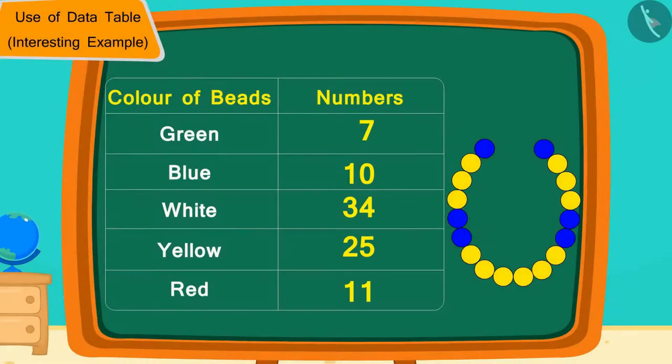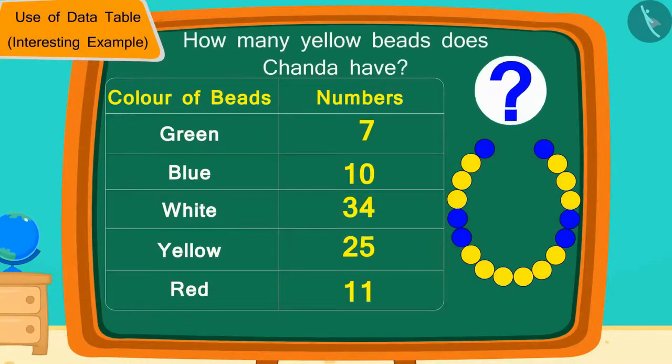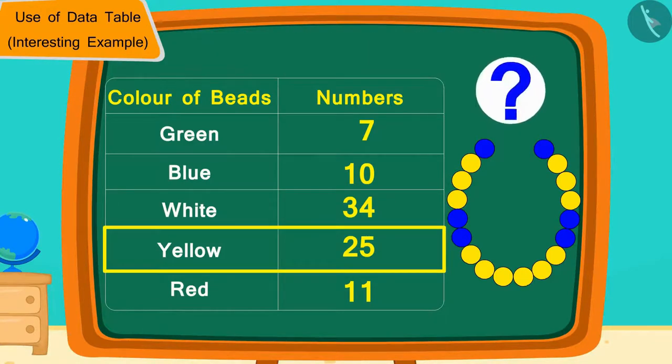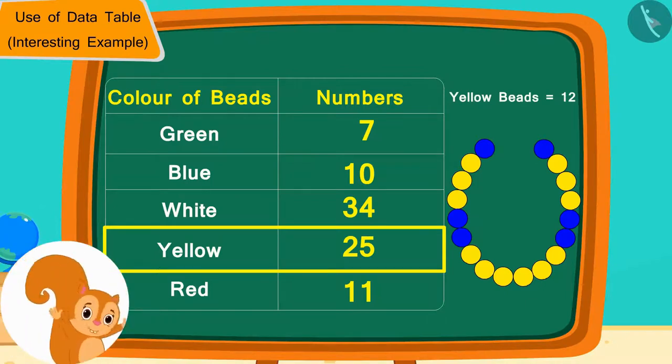In the same way, how many yellow beads does Chanda have? 25. And how many yellow beads does she need? 12. In this way, Chanda also has enough yellow beads for making the necklace.